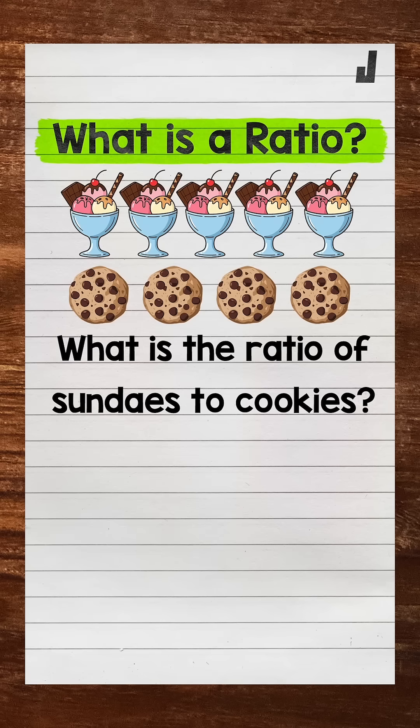I'm Math with Mr. J, and in this video I'm going to cover what a ratio is. So we will go through a quick introductory example here. Simply put, a ratio compares quantities and shows the relationship between them. In other words, a ratio shows the relationship between two or more amounts.